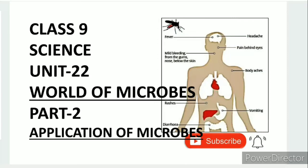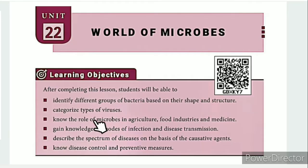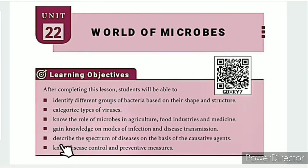Greetings from SS Class 9 Science Unit 22, World of Microbes Part 2: Application of Microbes. The lesson level learning objectives are: identify different groups of bacteria based on their shape and structure, categorize types of viruses, know the role of microbes in agriculture, food industries, and medicine, gain knowledge on modes of infection and disease transmission, and describe the spectrum of diseases on the basis of causative agents.